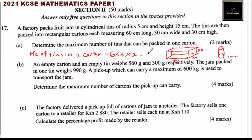Part B of the question: An empty carton and an empty tin weighs 560 grams and 300 grams respectively. The jam packed in one tin weighs 990 grams. A pickup which can carry a maximum of 600 kilograms is used to transport the jam.